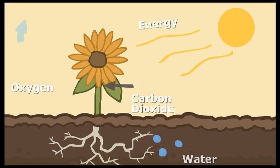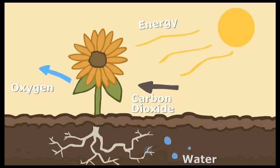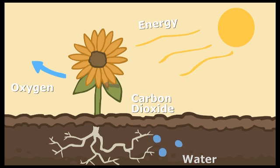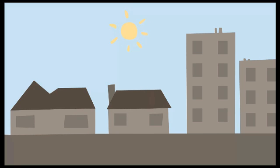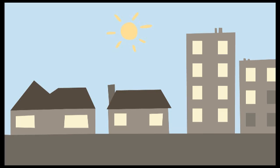For decades now, scientists have unlocked the secrets of how a plant creates energy through photosynthesis and can duplicate that process using modern technology and silicone. This process of creating electricity from the sun can power our homes and cities.